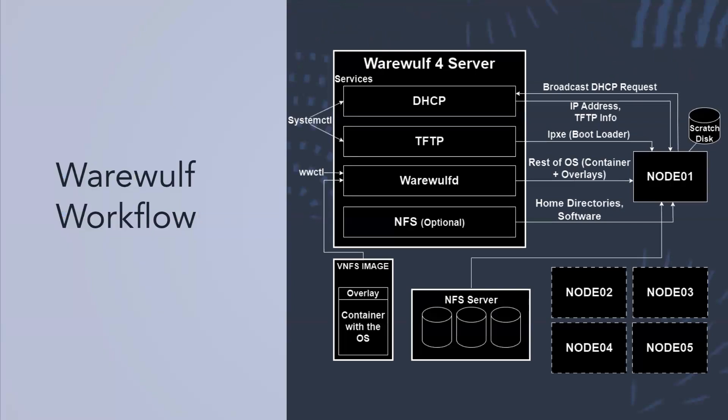This is an example of a Werewolf workflow. To make the server run, we install and configure a bunch of services: DHCP, TFTP, WerewolfD, and NFS. When we boot up the node, it first sends a DHCP request to the server, which replies giving the node its IP address as well as the TFTP info. This allows TFTP to communicate with the node, giving it the IPXE OS bootloader. WerewolfD then communicates with the node, giving it the rest of the OS — the VNFS image, which is a combination of a container with the OS plus overlays that provide additional configuration. NFS gives the node its home directories and software, which can live on the server or a remote location. As visualized here, we can do the same process for thousands of nodes at one time.